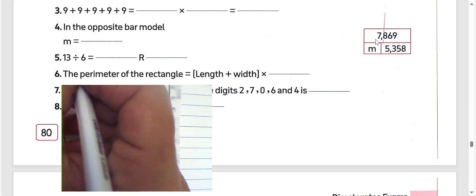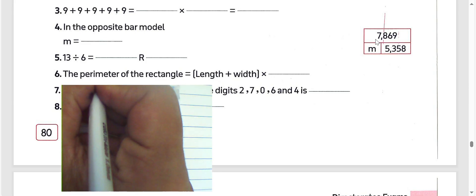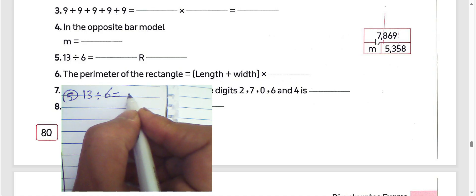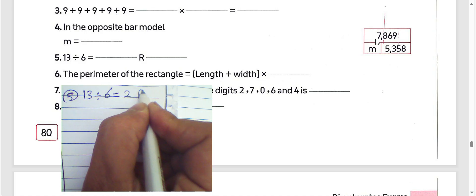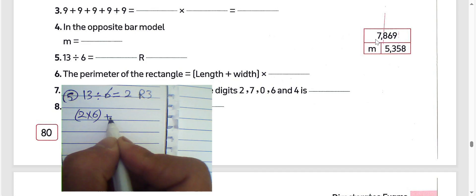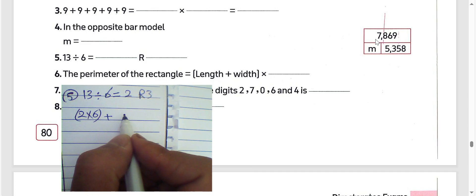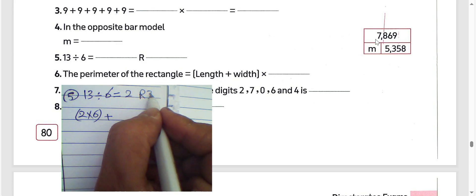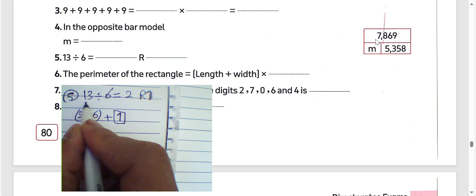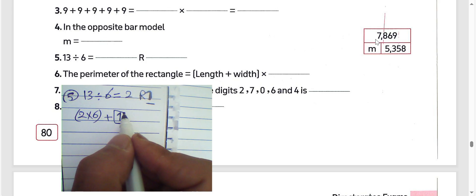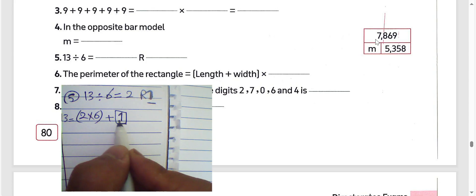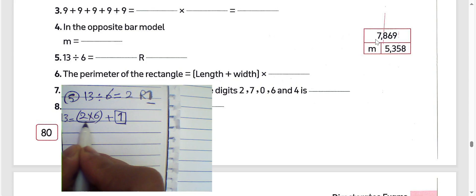Now we will solve question number 5: 13 divided by 6 equals 2 with remainder 1, because 2 times 6 equals 12, and 12 plus 1 equals 13. So the remainder is 1. Write 1 in the space.